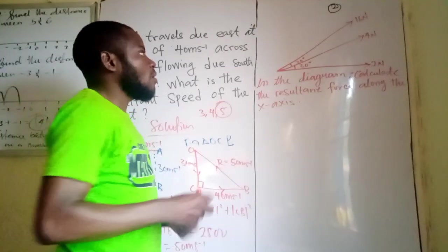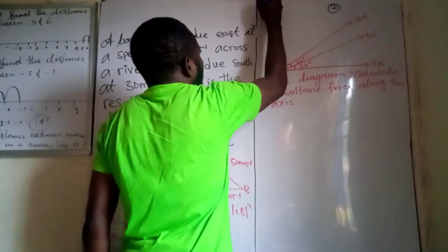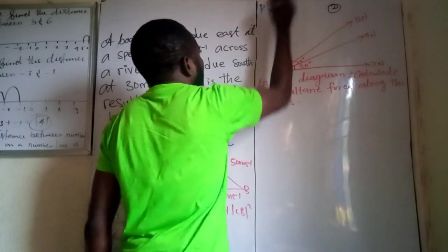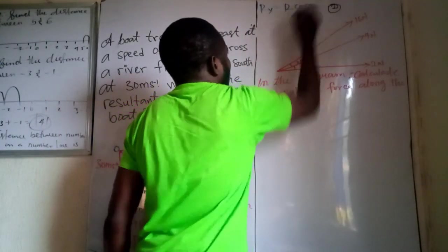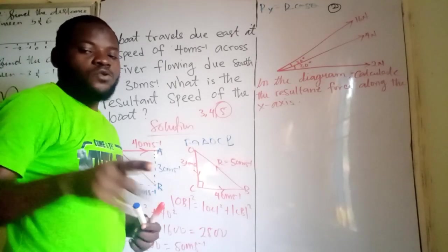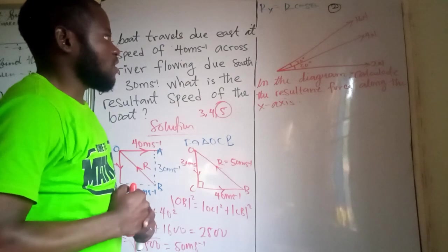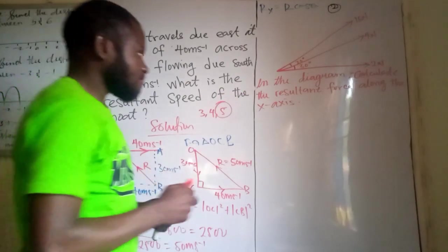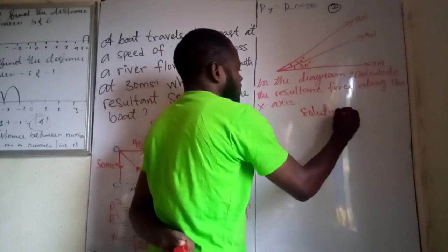Now, I would like you to recall that we have that the horizontal component of a vector is given as the vector cosine of the angle that it's made with the horizontal. So you can find out in that video that we have in the description box. Now, let's see this.